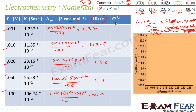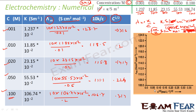Now we find √C for each concentration because we plot the graph between √C and λm. √0.001 ≈ 0.0316, √0.01 = 0.1, √0.02 ≈ 0.1414, √0.05 ≈ 0.224, and √0.1 ≈ 0.316.